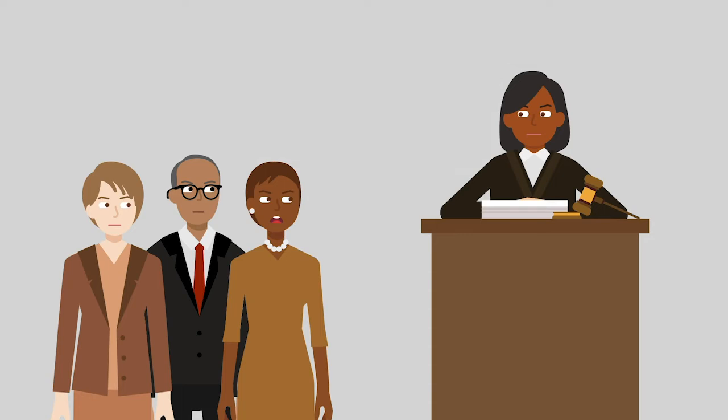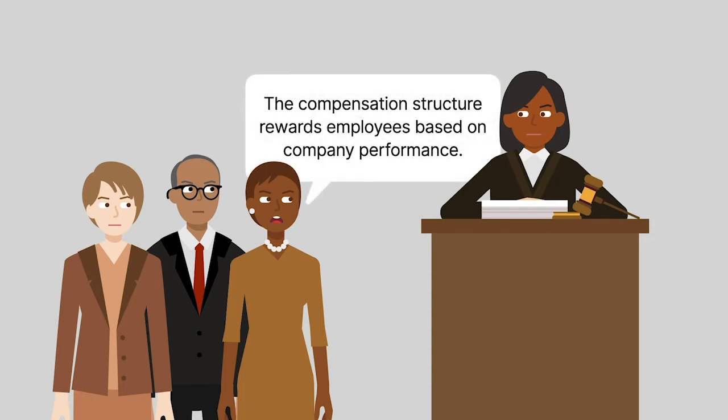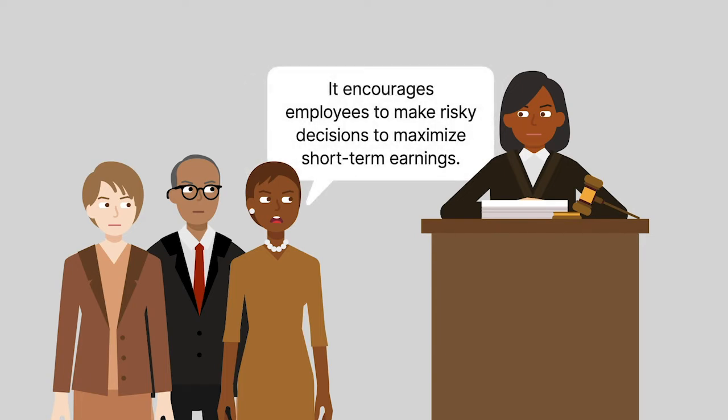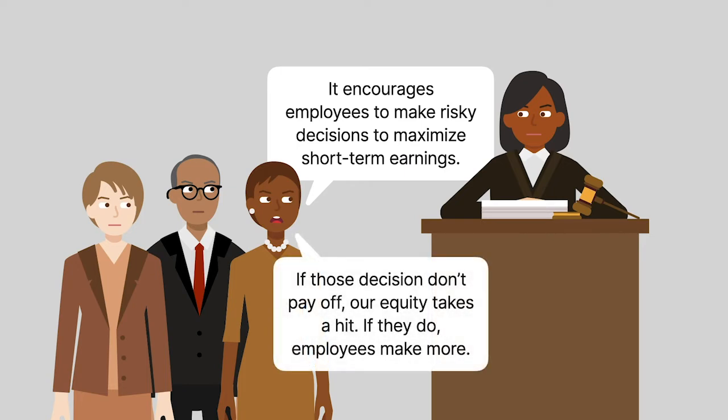The plaintiffs alleged that Goldman Sachs' compensation structure rewarded employees based on the company's performance. The more money Goldman Sachs made, the more money its employees received. The plaintiffs asserted that this compensation structure encouraged employees to make risky investment decisions to maximize short-term earnings. If those decisions didn't pay off, the stockholders' equity took the hit.